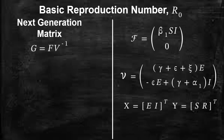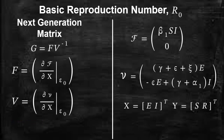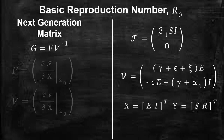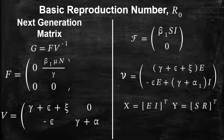The next generation matrix is basically the product of two matrices: matrix F and matrix V inverse. Matrix F is formed by the partial derivative of the vector of new infection rates evaluated at the disease-free equilibrium. Matrix V is formed from the partial derivative of the vector of other rates, also evaluated at the disease-free equilibrium. Doing that, you will end up with matrices F and V as shown.